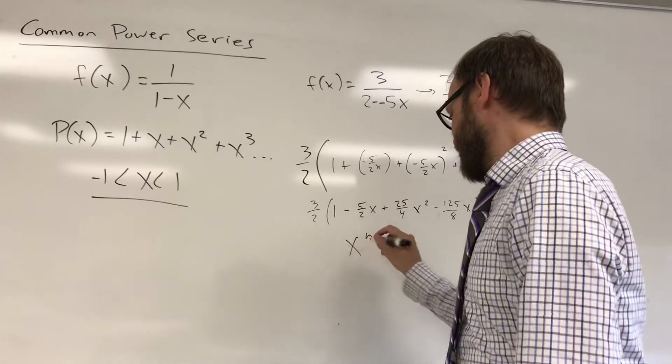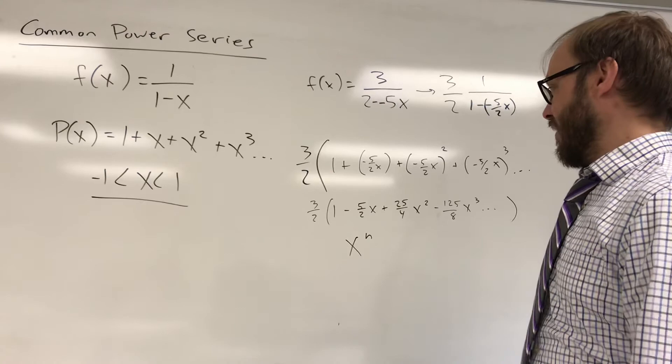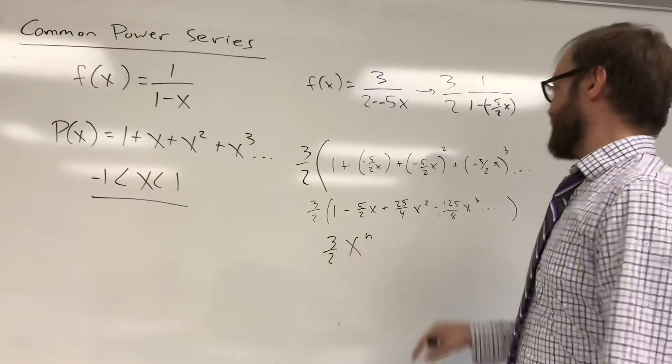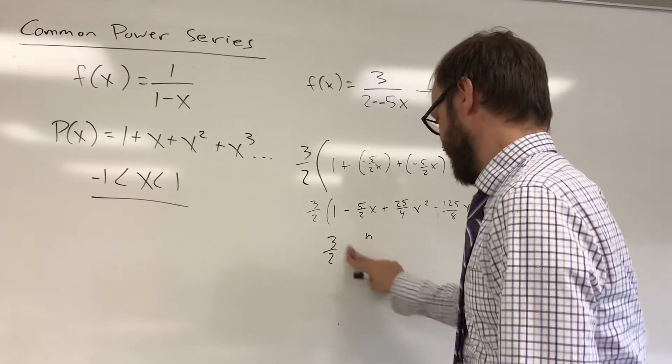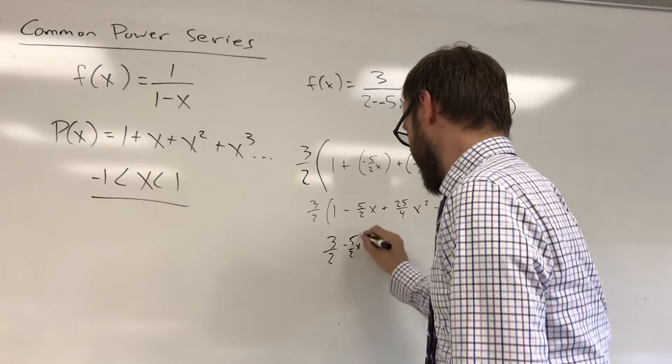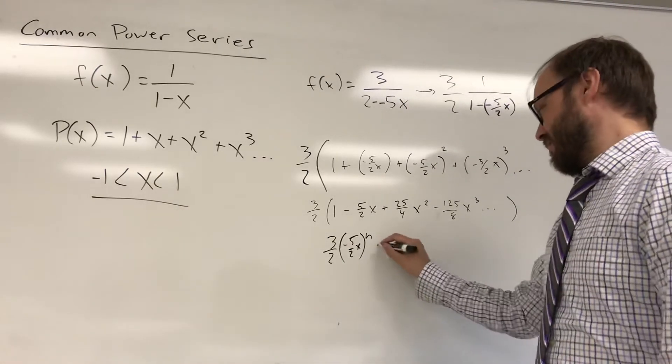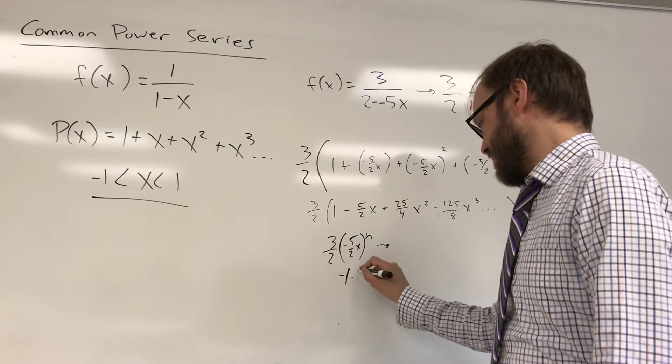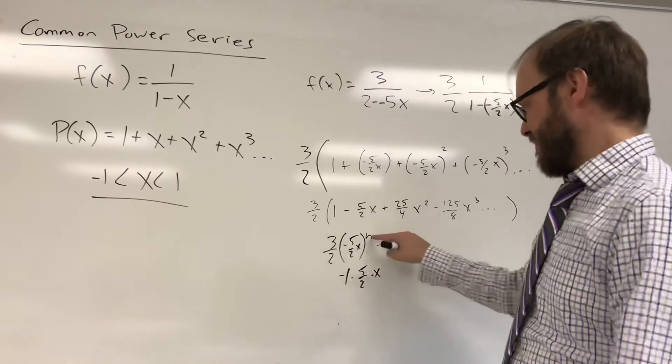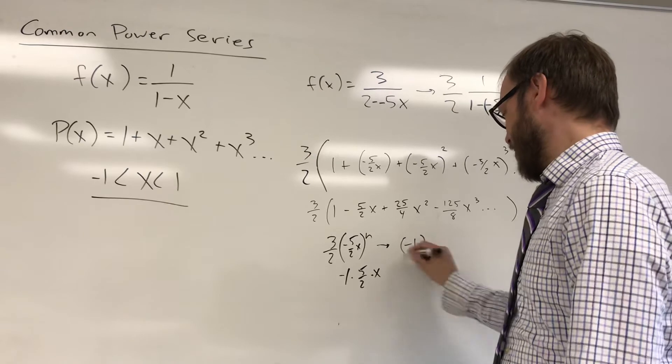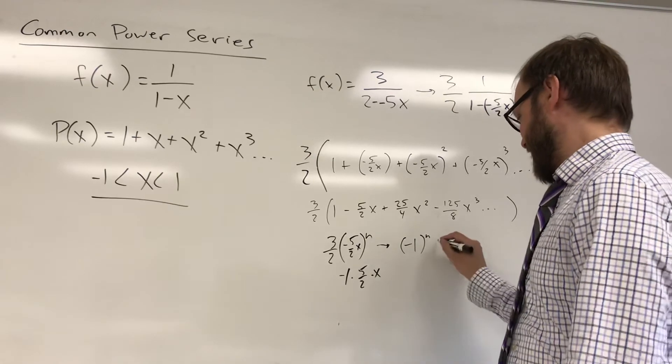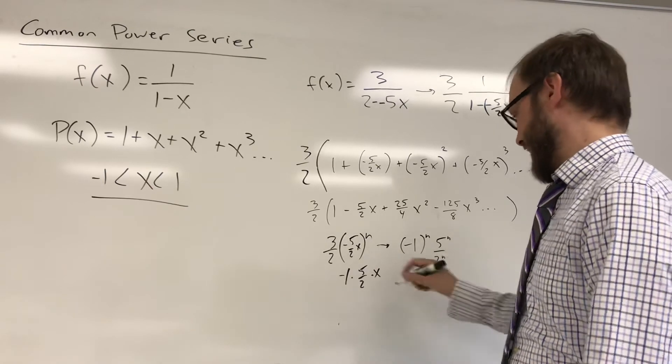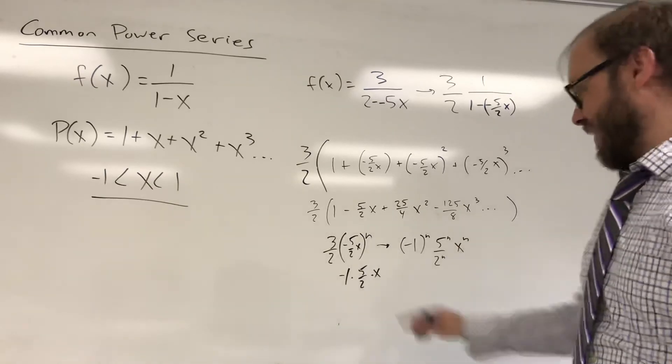If you're trying to get the general term, again, normally the general term would be x to the n. We have multiplied the whole thing by 3 halves. So each term would get multiplied by 3 halves. Instead of an x as my input, I have a negative 5 halves x. And again, you can kind of simplify that down some. For example, you could write that as negative 1 times 5 halves times x. Each of those is being taken to the n power. So you'd have that negative 1 to the n out in front. You'd have a 5 halves being taken to the n power, which might be like a 5 to the n over a 2 to the n. And then you'd have an x to the n. And then the whole thing is being multiplied by 3 halves.